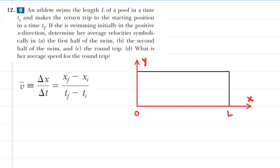For parts A, B, and C, we are asked to calculate the average velocity of a swimmer as she swims the length of a pool. The equation for average velocity is given as follows: the average velocity, symbolized by V-bar, is equal to the final position minus the initial position, divided by the time interval during which the motion takes place.